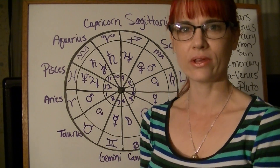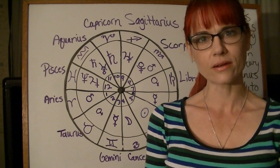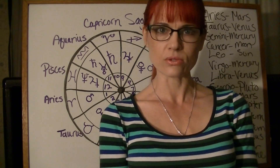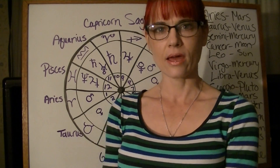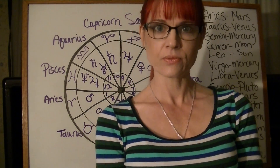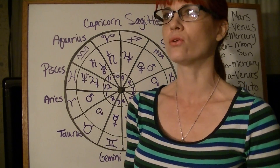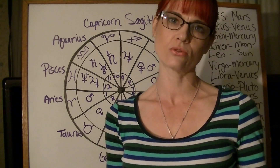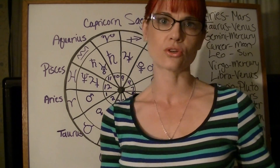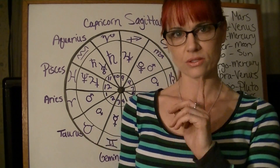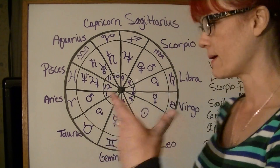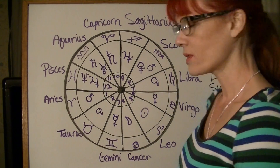Hi everyone, Jewel Mayberry here. Today we are talking about house rulers — how to find those and what those are. A house ruler is the same thing as a house lord, so when someone talks about the lord or ruler of a certain house placed a certain way, that is what we're talking about. I'm going to show you how to find that, and it's really easy.